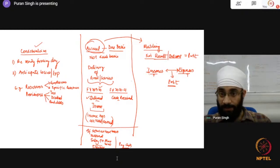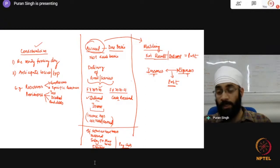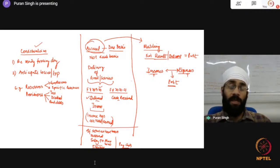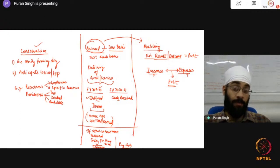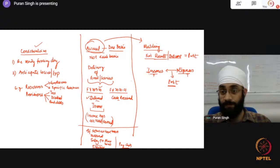Suresh has a question about assignment two, question 12: personal accounts are related to — the accepted option is outstanding expenses, but even prepaid expenses, accrued income, and income received in advance are representative of personal accounts. Typically, outstanding expenses are a personal account because they are a liability. But prepaid expenses and accrued income are assets, and in assets we don't have a category of representative personal assets.